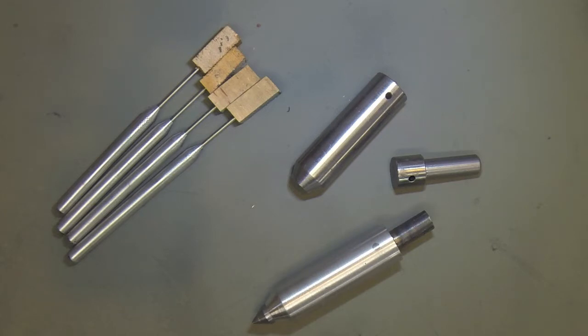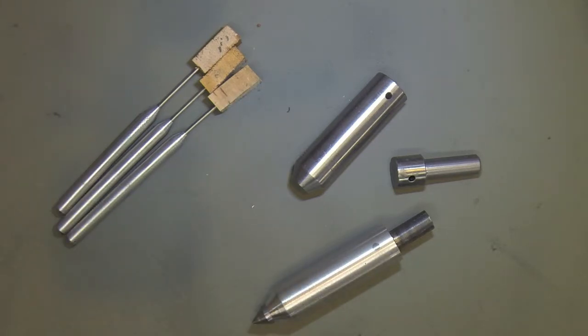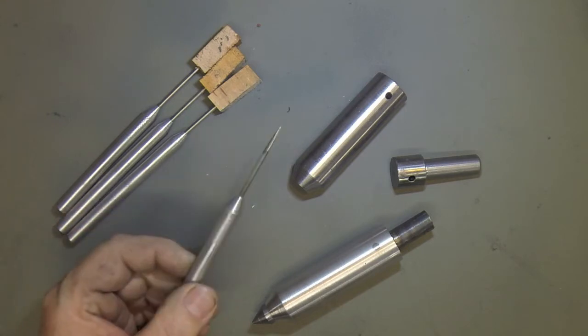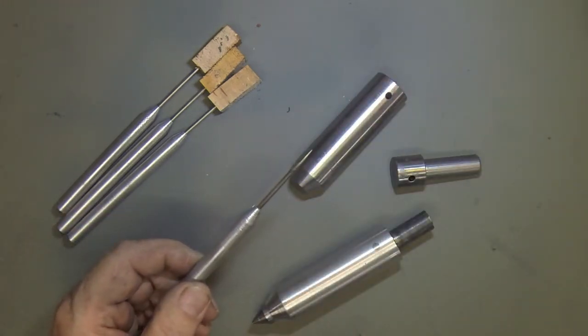This is for the What's in Your Box toolmakers collaboration and one of the projects here is some scribes. I found these scribe points, they're carbide scribe points, fairly inexpensive.